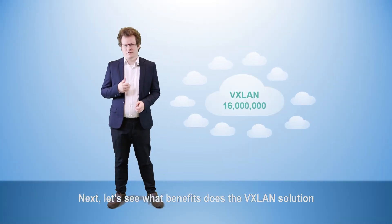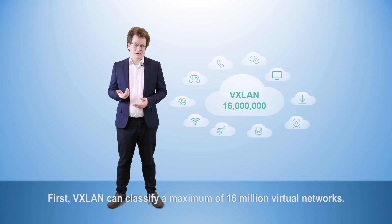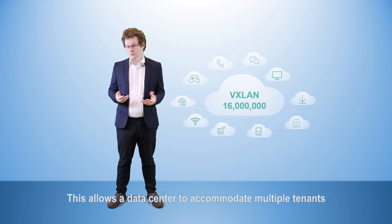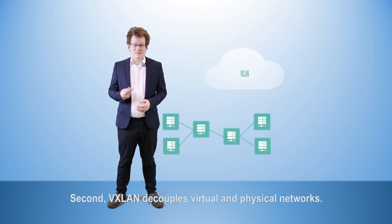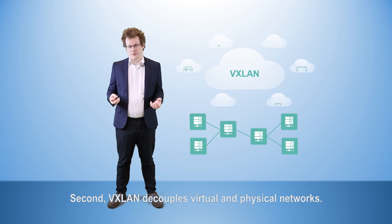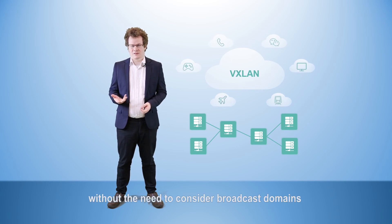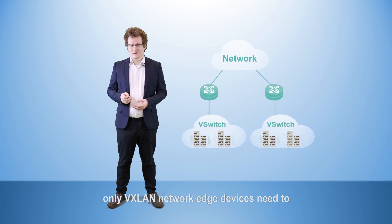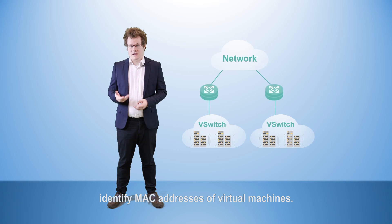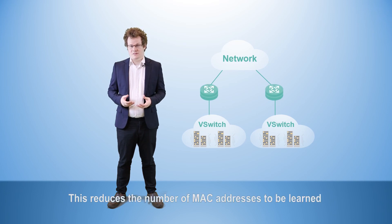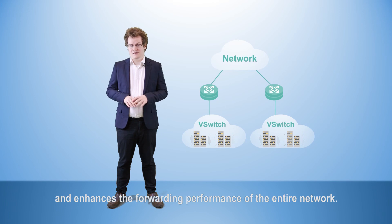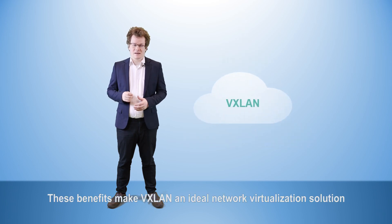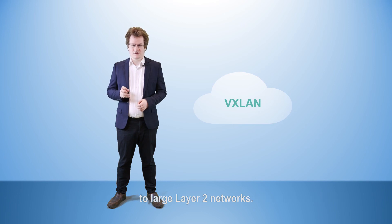Let's go over the benefits that the VXLAN solution brings to data center networks. First, VXLAN can classify a maximum of 16 million virtual networks, allowing a data center to accommodate multiple tenants and greatly improving operating revenue. Second, VXLAN decouples virtual and physical networks, so tenants can plan their own virtual networks without needing to consider broadcast domains and IP addresses on physical networks, simplifying network management. Third, after VXLAN is deployed, only VXLAN network edge devices need to identify the MAC addresses of virtual machines, reducing the number of MAC addresses that need to be learned and enhancing the forwarding performance of the entire network. These benefits make VXLAN an ideal network virtualization solution for large layer 2 networks.